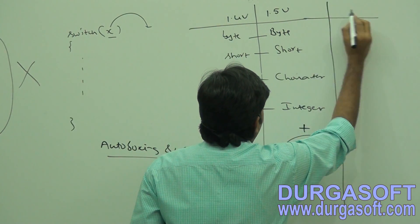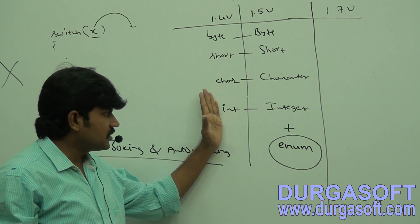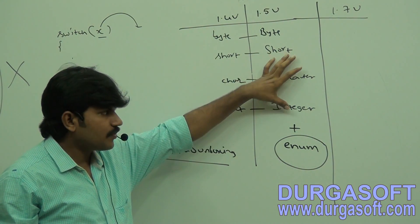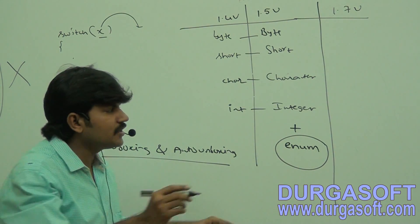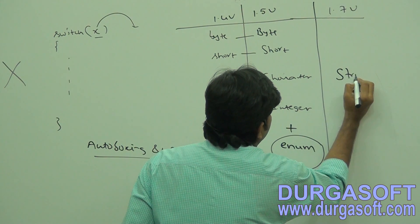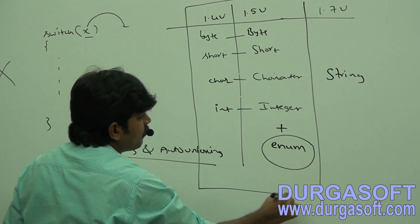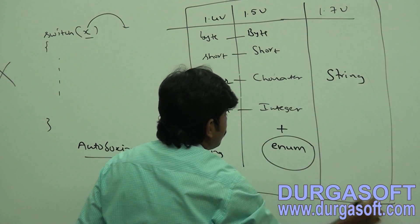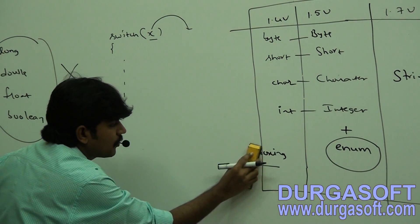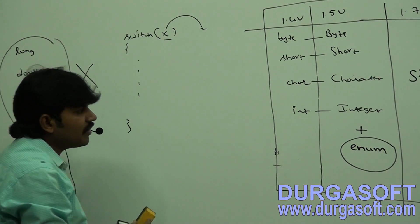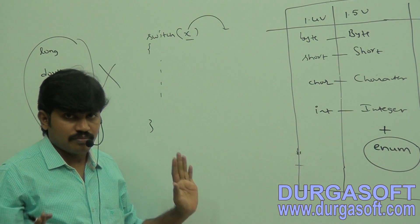From 1.7 version onwards, in addition to primitives, corresponding wrapper classes, and enum, string type is also allowed as a switch argument. I will provide much more explanation while discussing the switch statement under flow control — there I will explain why only these types are allowed and why the remaining types are not.